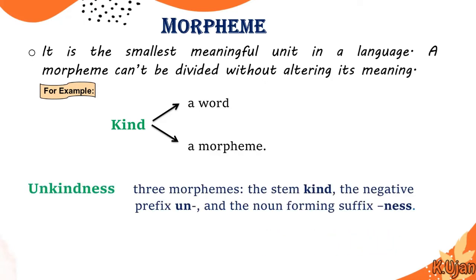Here is another example: 'unkindness.' It is actually three morphemes — the same 'kind,' the negative prefix 'un,' and the noun-forming suffix '-ness.' So the word 'unkindness' is a word, but it consists of three morphemes: 'kind,' 'un,' and '-ness.'